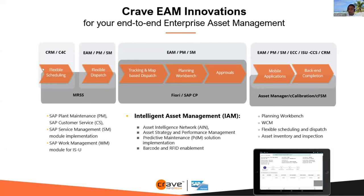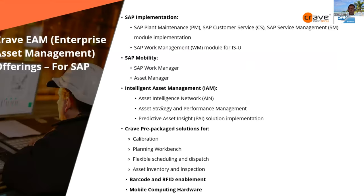We can provide everything from scheduling to completion of work, including asset intelligence components. Our EAM capabilities cover: standard SAP plant maintenance implementation, customer service, service management, work management for utilities, mobility with Asset Manager, Work Manager, Inventory Manager, intelligent asset management including AIN, asset strategy and performance, predictive asset insight, and our pre-packaged solutions. We also work with barcode RFID enablement and mobile computing hardware — a complete end-to-end solution including SAP software, mobility, middleware, and hardware.